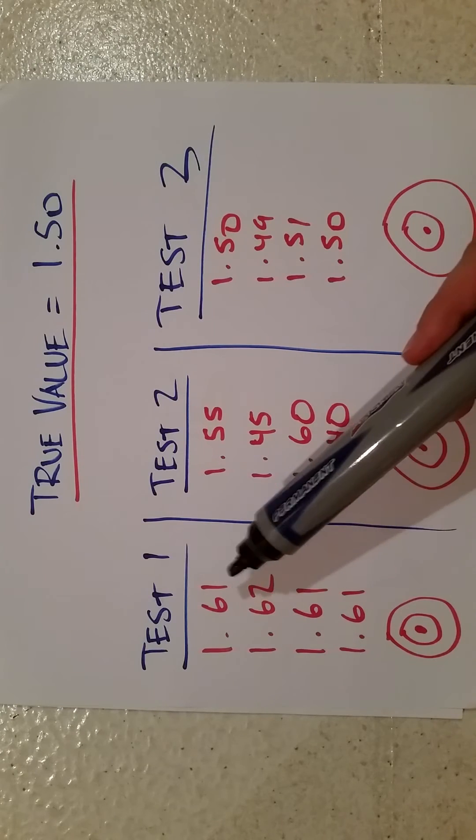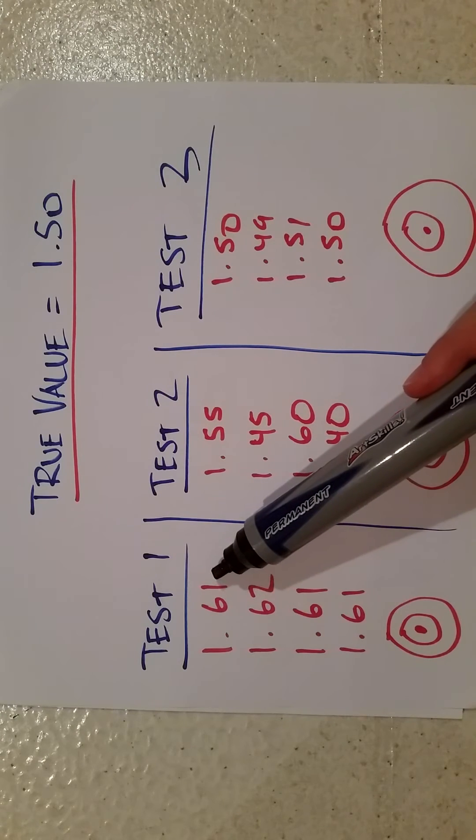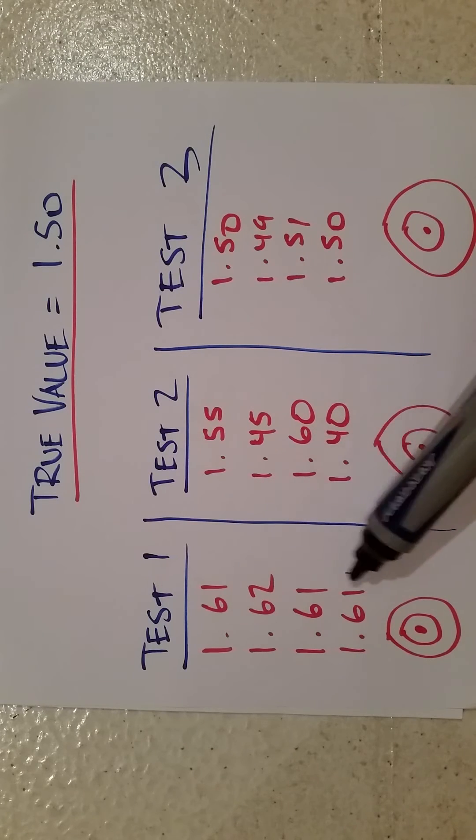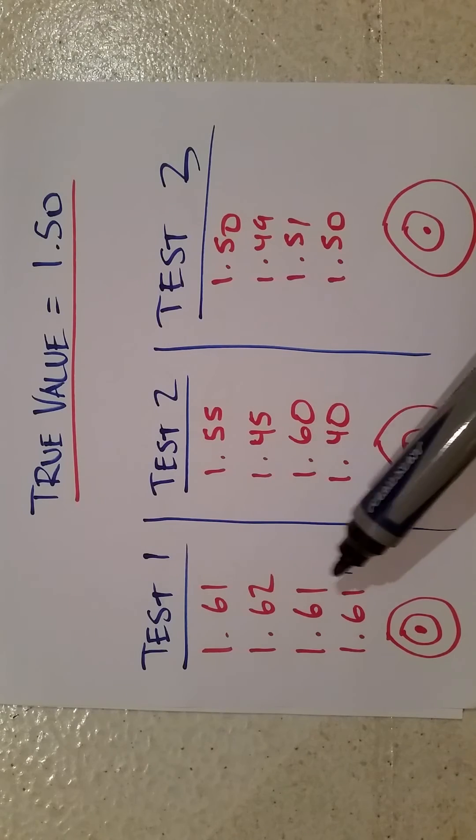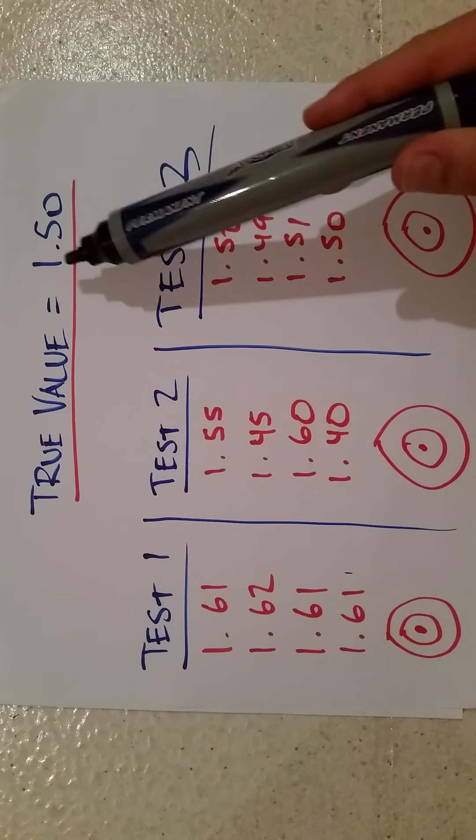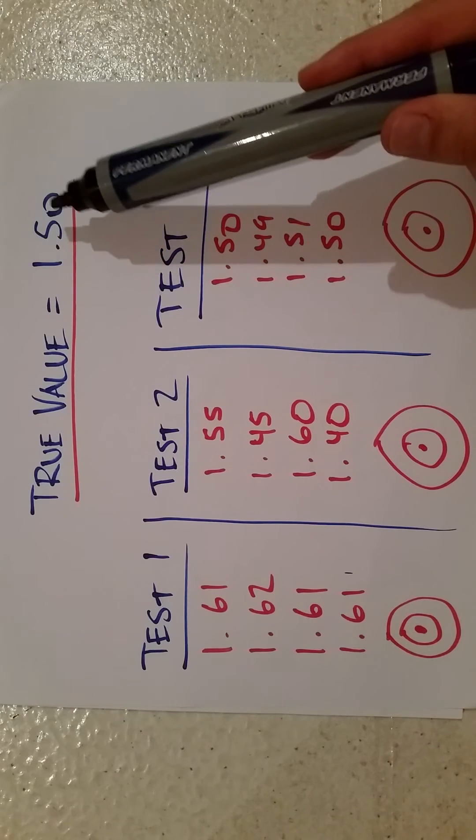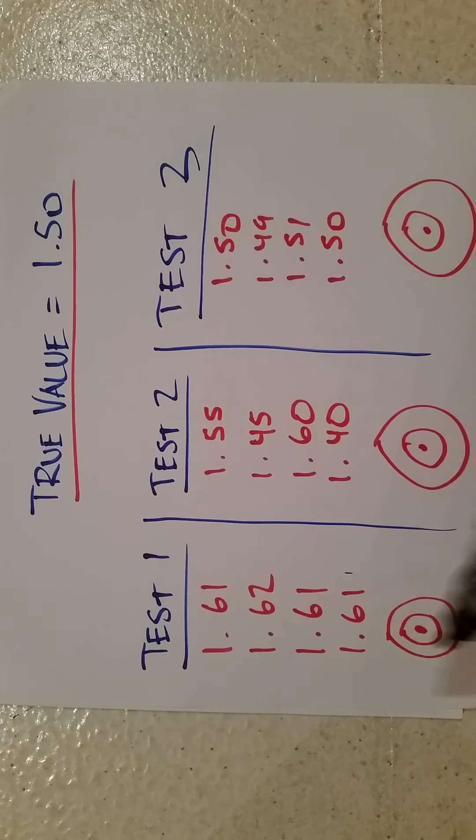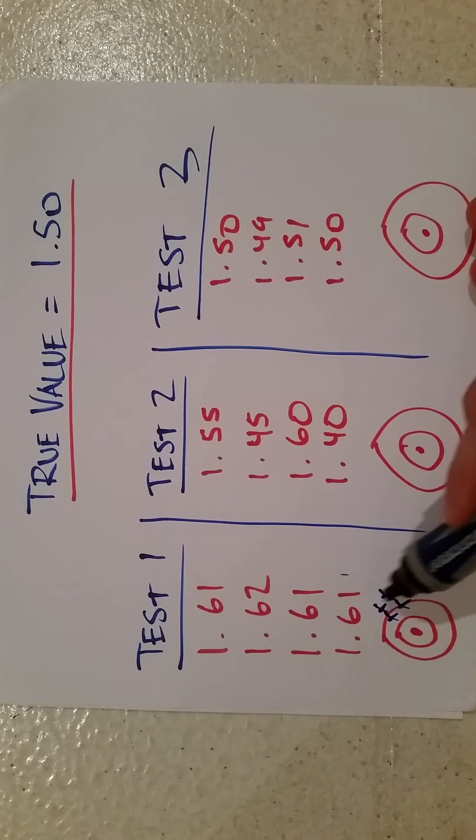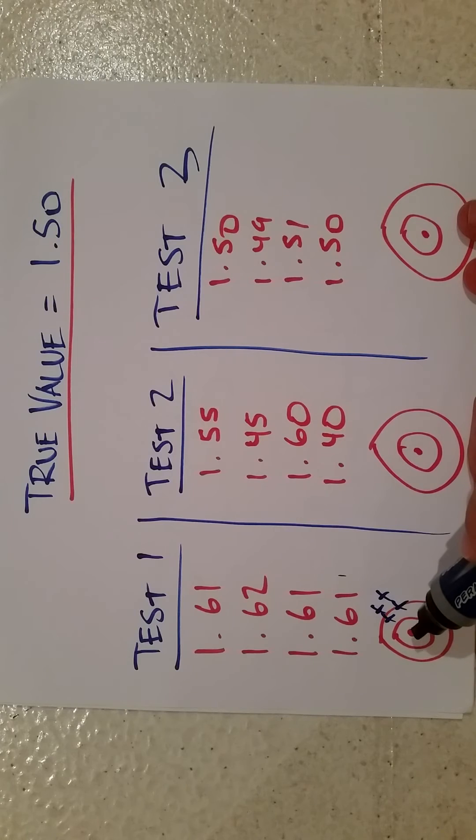Now let's look at this first test. The first test has values of 1.61, 1.62, 1.61, 1.61. These test values here, they're all pretty similar, right? They're all around the 1.61 or 1.62 range, but they're not very accurate. They're not very close to the true value. On this mini bullseye down here, that would be like our other example where it's a tight grouping but it's not very close to the accurate or the true value of 1.50.